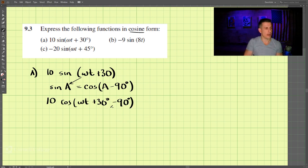And we can simplify this. So we have 10 cosine omega t minus 60 degrees. That is the solution for part a.